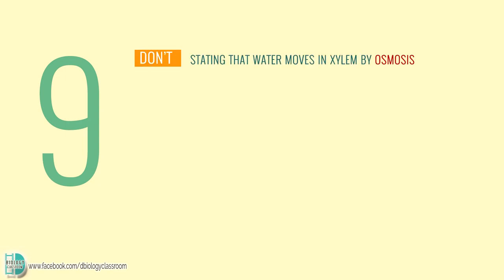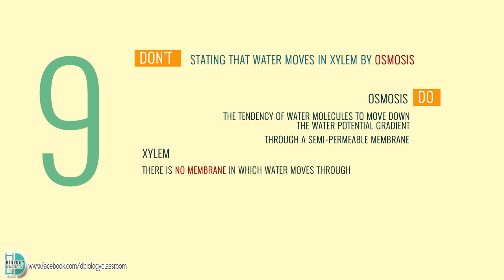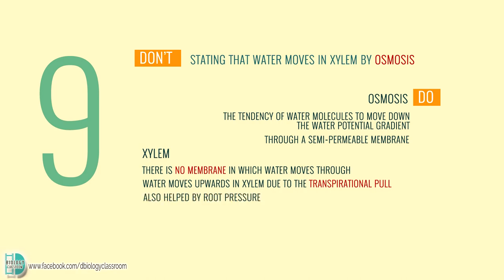Number 9: stating that water moves in xylem by osmosis. Osmosis is defined as the tendency of water molecules to move down the water potential gradient through a semi-permeable membrane. In xylem, there is no membrane through which water moves, so that is not osmosis. The main reason water moves upwards in xylem is the transpirational pull. It also helps by root pressure.